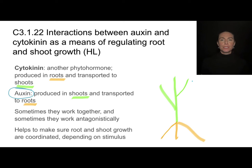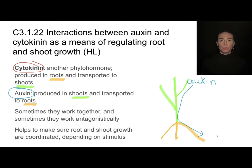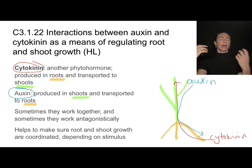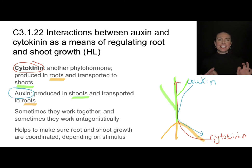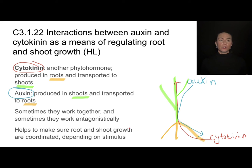Auxin is generally produced in the shoots — all the way at the top of the plant — and is transported down to the roots. Cytokinin is a different phytohormone produced in the roots, and it travels upwards to the shoots, so it goes in the opposite direction. Sometimes they work together to accomplish growth, and other times they work antagonistically — one can inhibit the other. The whole point is to understand that multiple hormones work together to ensure that shoot growth is coordinated depending on the stimulus.